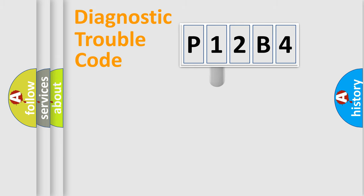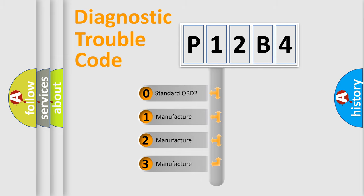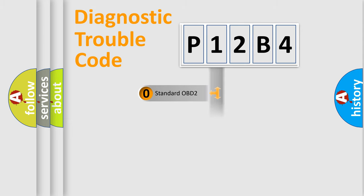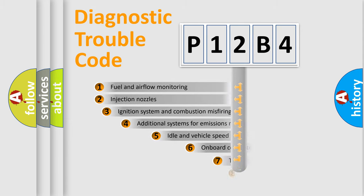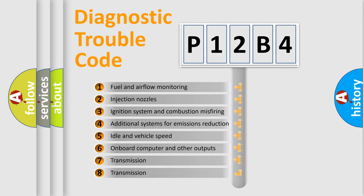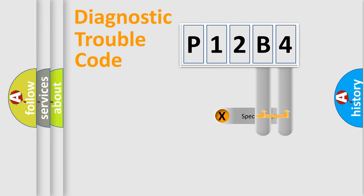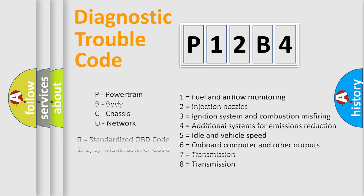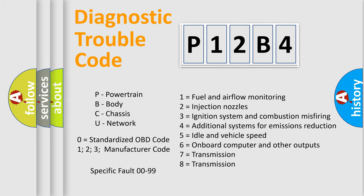This distribution is defined in the first character of the code. If the second character is expressed as zero, it is a standardized error. In the case of numbers 1, 2, or 3, it is a more specific manufacturer-specific error expression. The third character specifies a subset of errors, and this distribution is valid only for the standardized DTC code. Only the last two characters define the specific fault of the group — but only when the second character is zero.